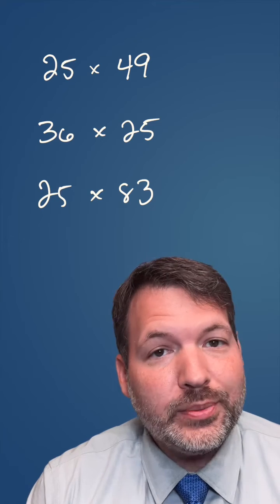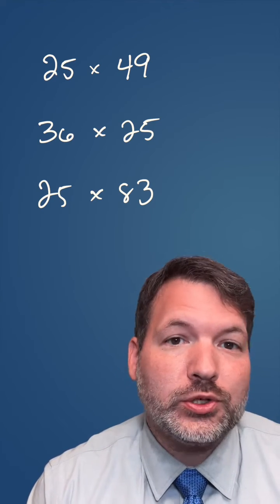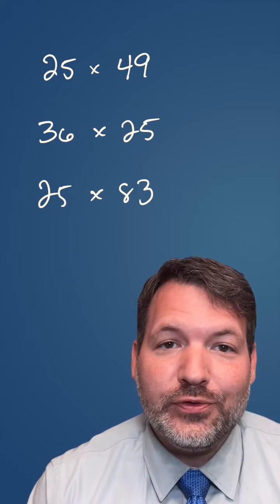All you have to do is take a look at the number you're multiplying by 25 and divide it by four. Don't worry about any kind of remainder, we're just going to write down how many times four goes into that number.